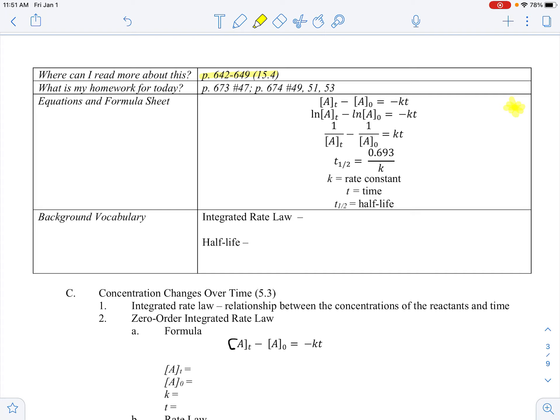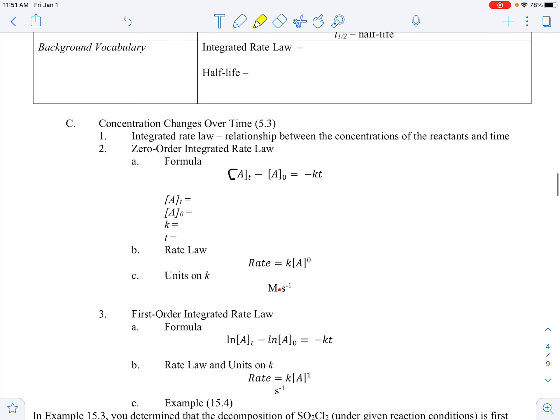In our last video, we talked about how to find the order of a reaction based on the initial rate method. We're going to today use what is called the integrated rate law. So we're talking about changes over time. Our integrated rate law basically is our relationship between the concentration of the reactants and time. We're going to start with the easiest first and kind of work out. So we have our zero-order integrated rate law. I added this, sorry, I forgot to put it in when I was typing initially.